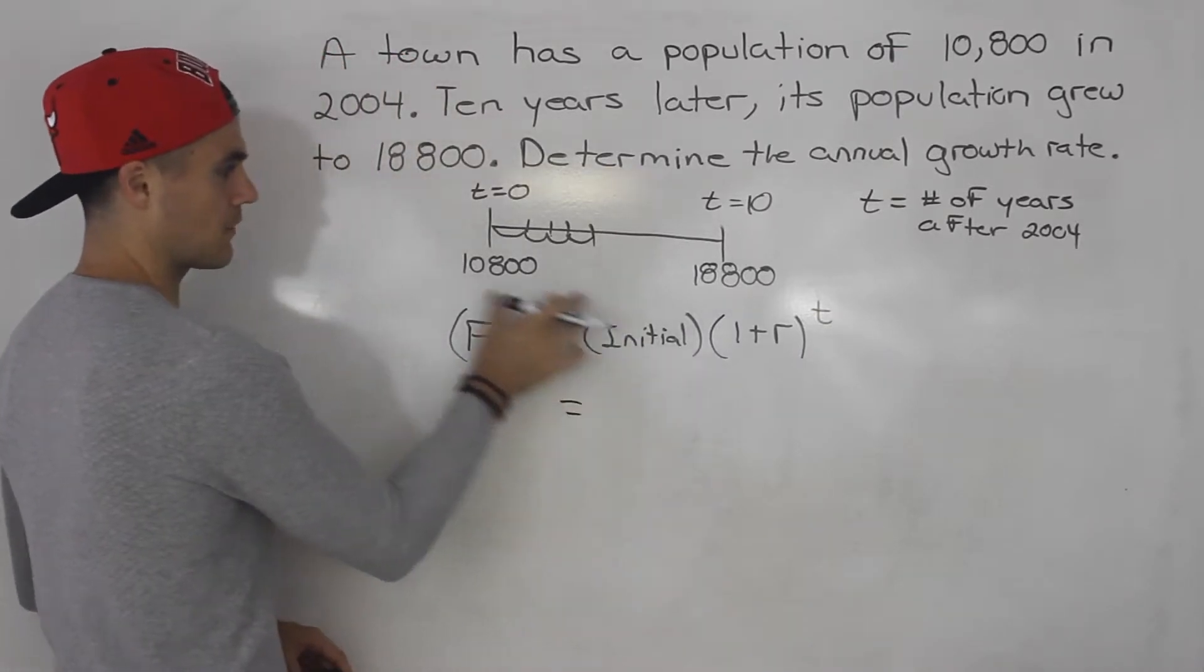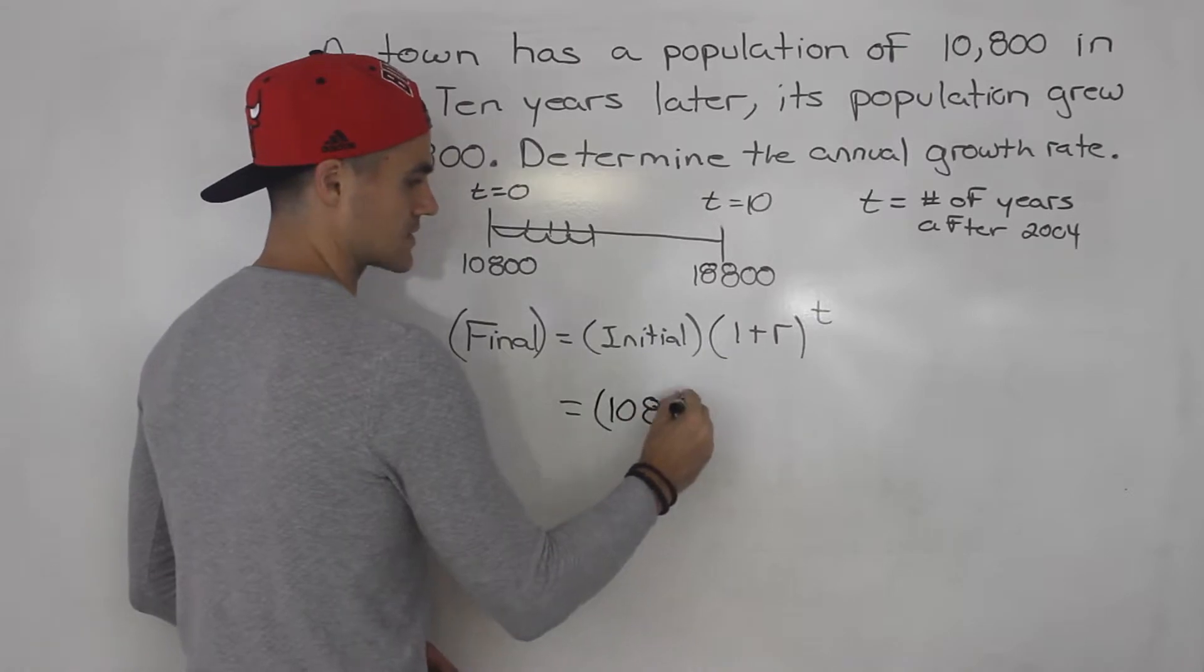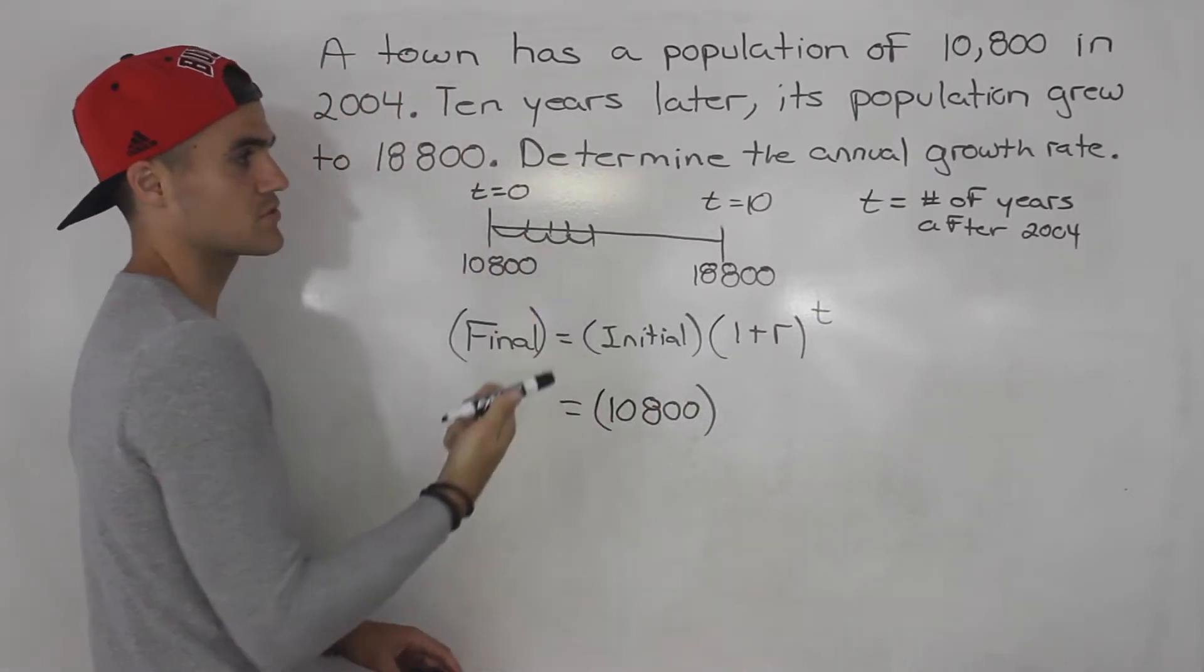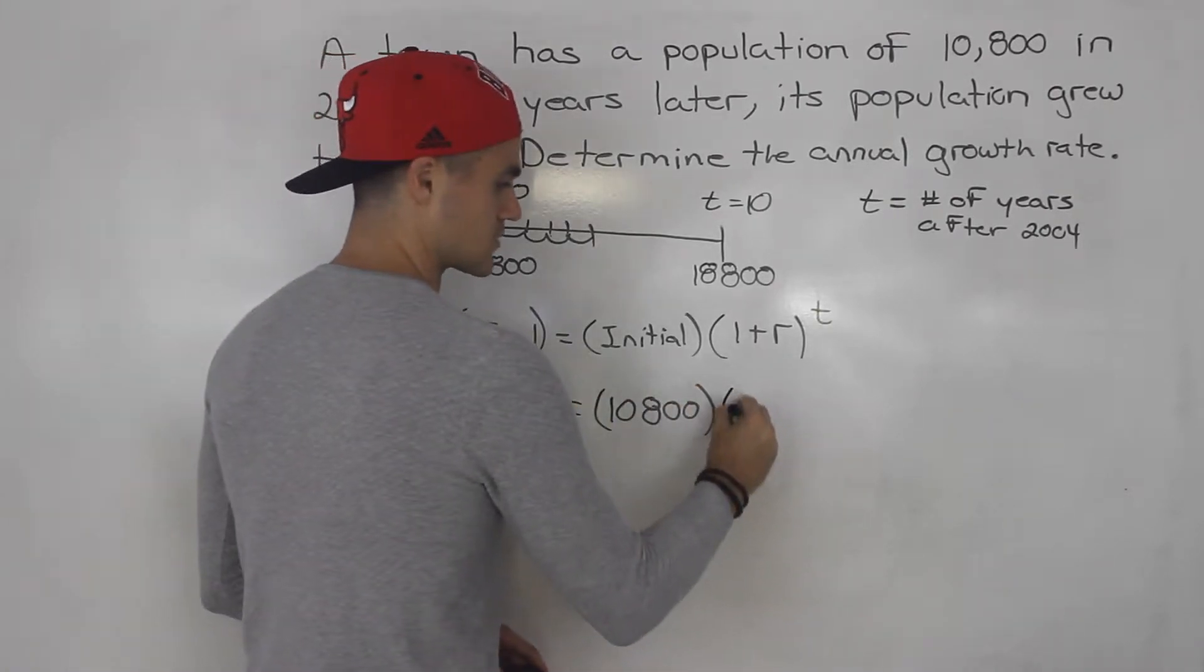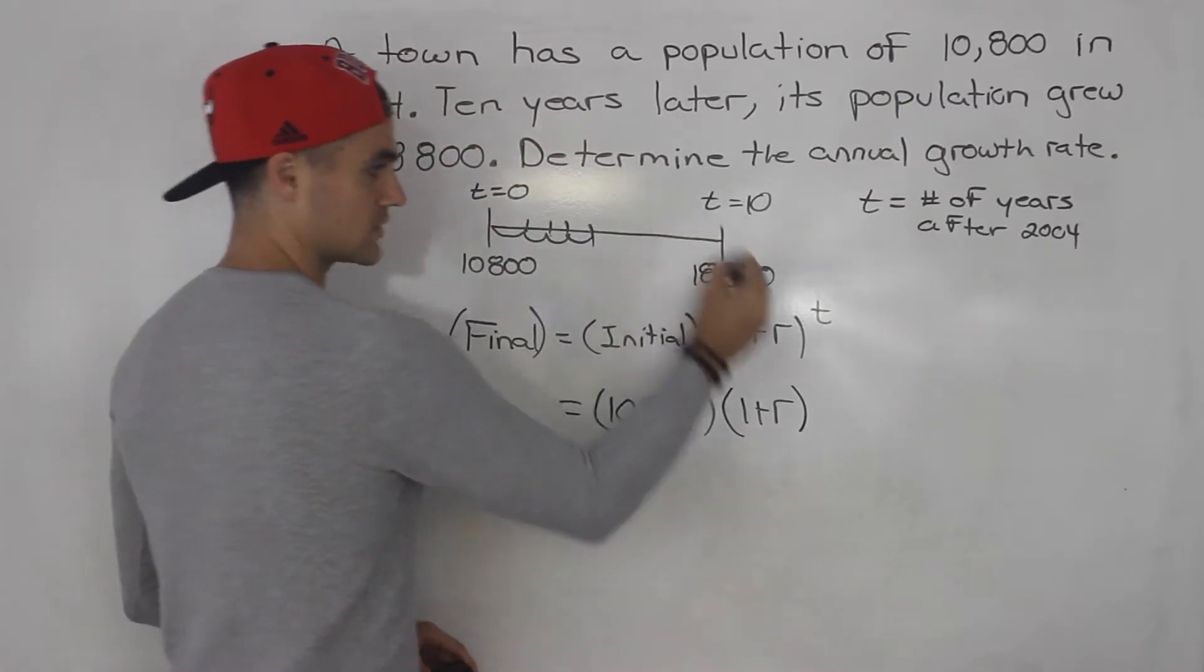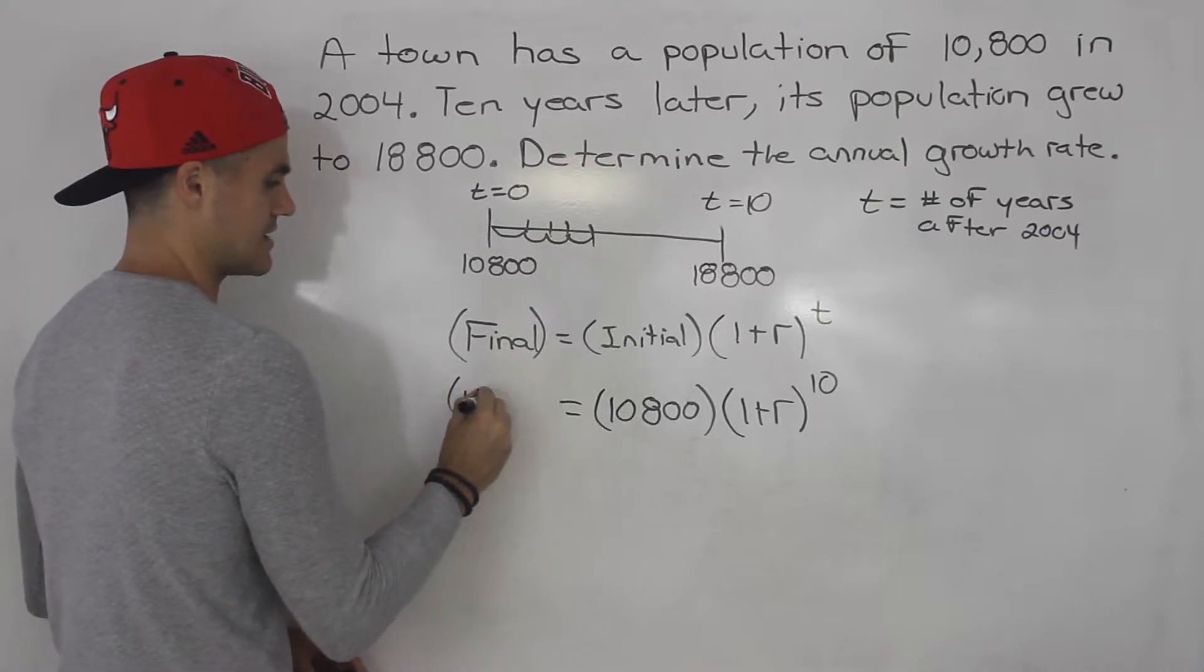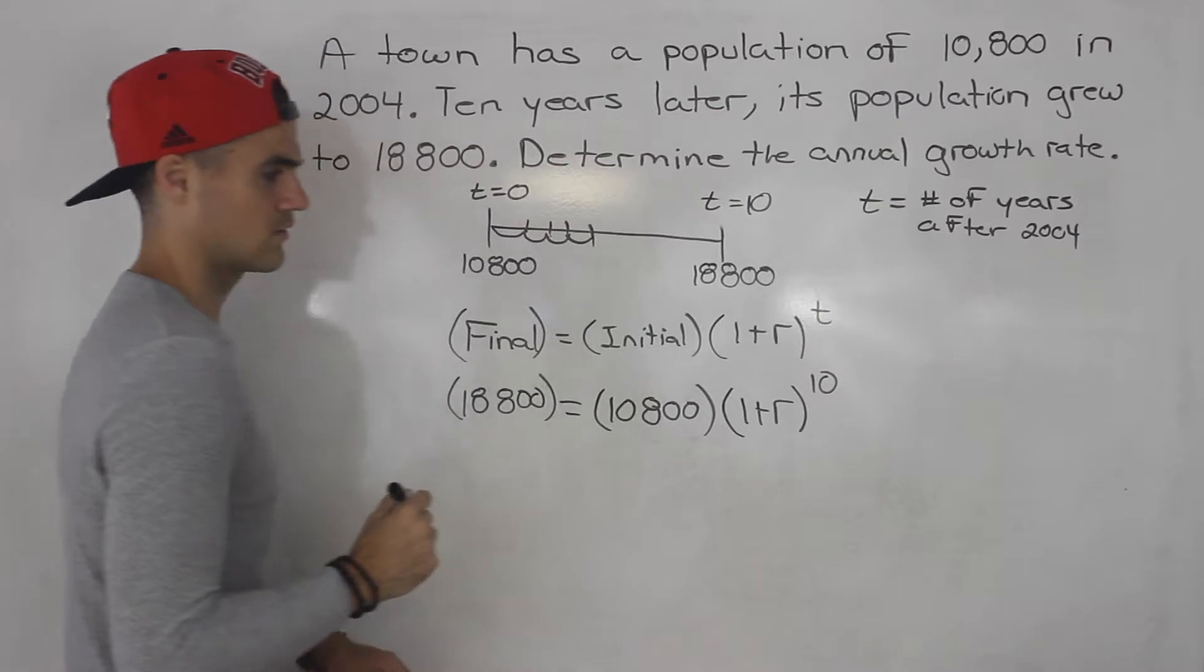Well, the initial amount we know is 10,800. That's what the population is starting at, and we said that a t value of 0 represents 2004. Now this 1 plus r, this r we're going to be solving for, and we're told in 10 years, the final population is 18,800.